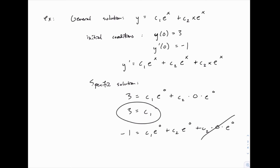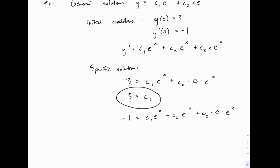Again this last part simply goes away, it's all 0. And both of the other terms, the e to the 0 is just 1, so this simplifies to negative 1 equals c1 plus c2.